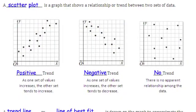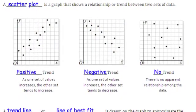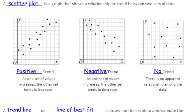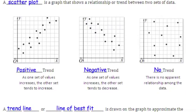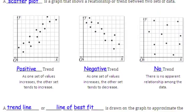A scatter plot is a graph that shows a relationship or trend between two sets of data. The first graph shows a positive trend, where one set of values increases, the other set tends to increase.